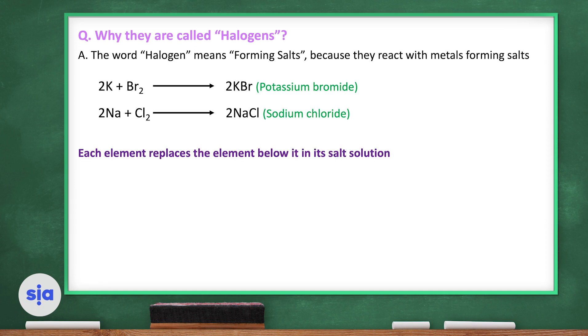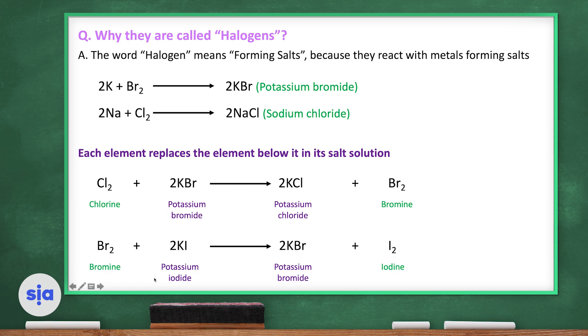Each element replaces the element below it in its salt solution. This means that if I take potassium bromide and put it with chlorine, the potassium will take the chlorine and form potassium chloride, and bromine will be alone. This is a salt solution. The chlorine replaced the bromine in potassium iodide. It will form potassium bromide plus iodine. This means that the bromine replaced the iodine in its salt solution.